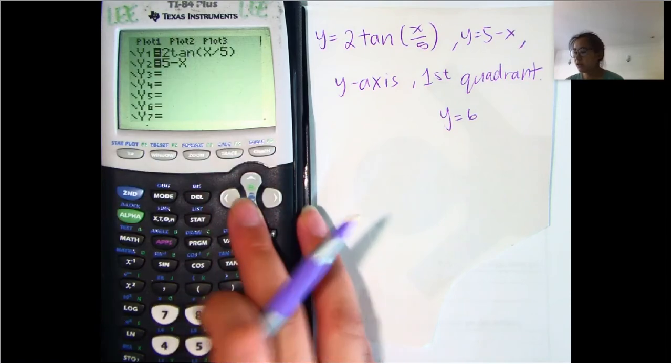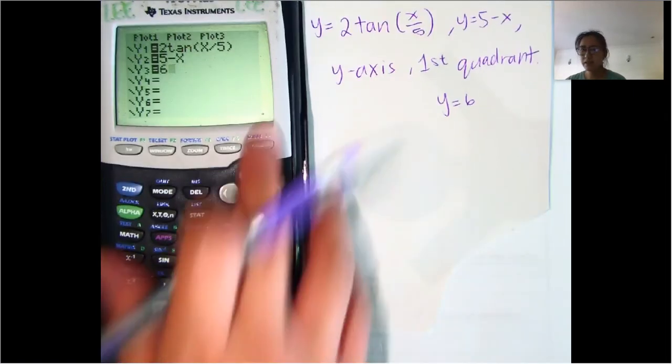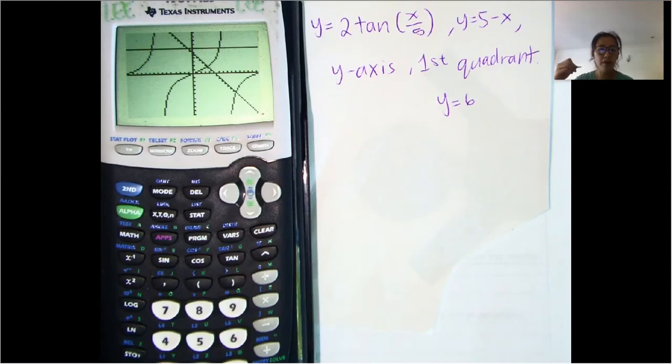Okay, so let's go ahead and also graph Y equals 6 so we can kind of see where that is. So we're revolving around that line there. So what you'll see right now is that the area we are revolving is not touching the line that we're revolving around. So does that mean washer or disk?